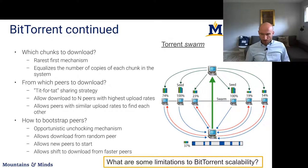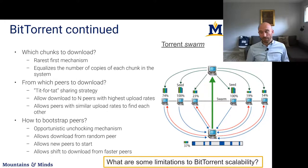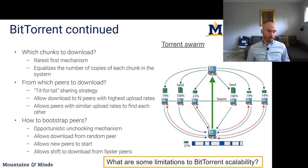Another question: what are some limitations to BitTorrent scalability? What could be preventing the system from working well, based on your knowledge of how networks are laid out and how ISPs connect with each other?